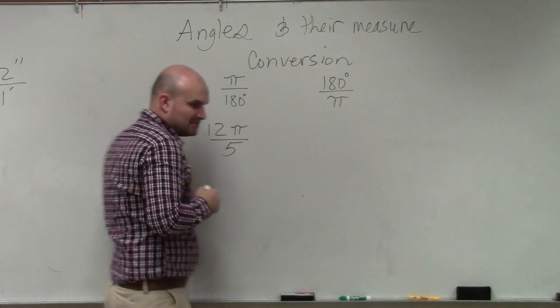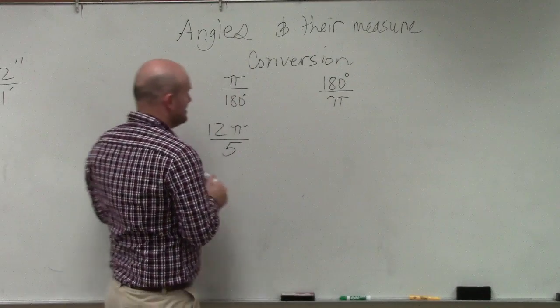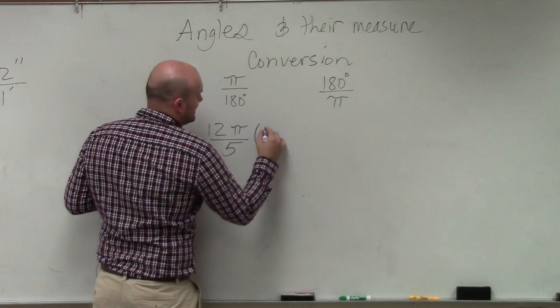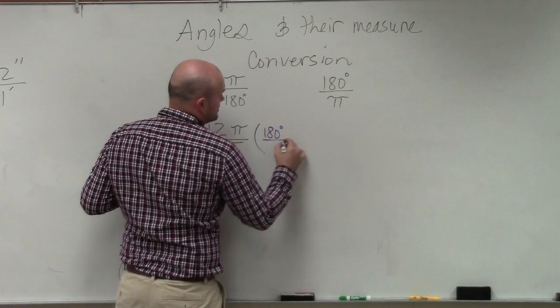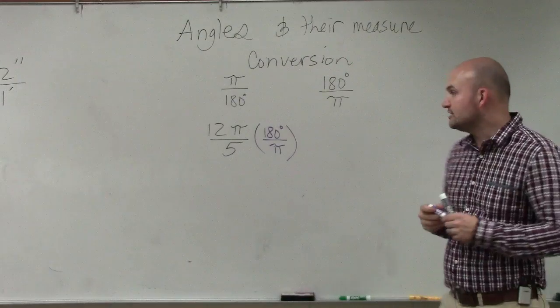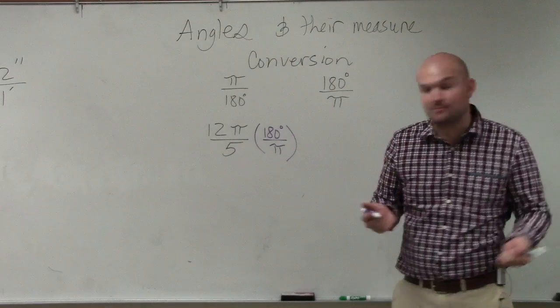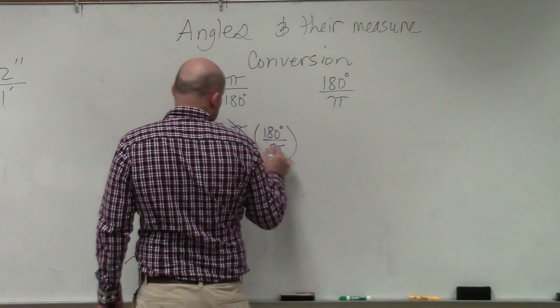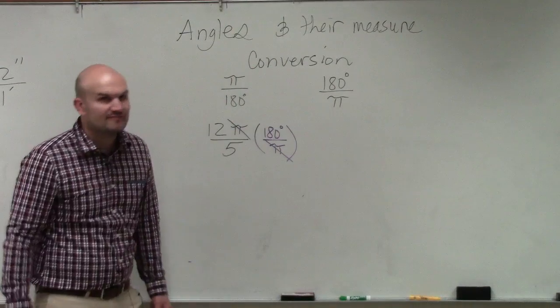So what we're going to do is multiply it by 180 degrees over pi. By multiplying 180 degrees over pi, what's nice about this is my division property, or by using division property, my pi's divide to 1.